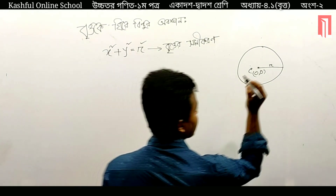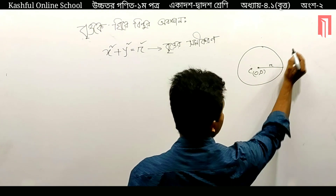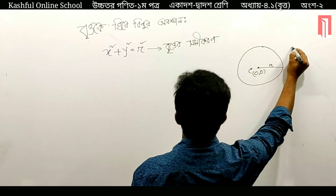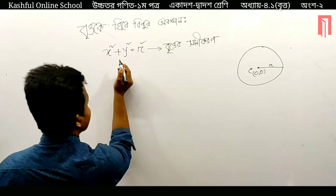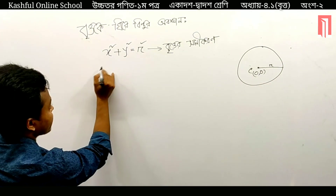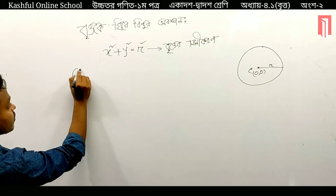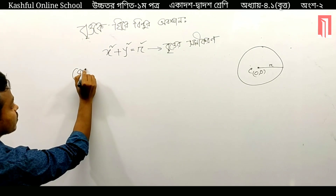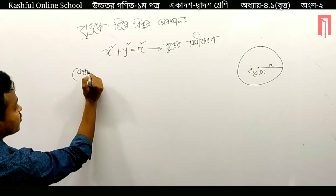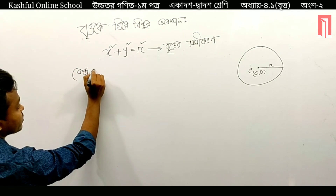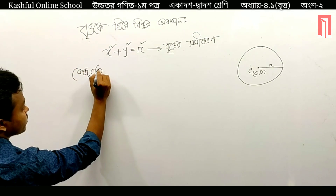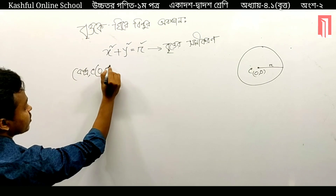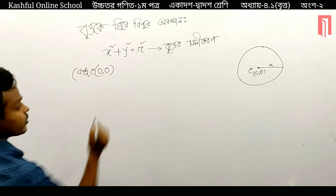We are in a position where we are not in a position. So we have to write the position where we are. Where is our position? This position is the position of the center — zero, zero.